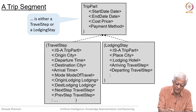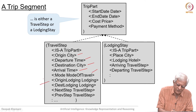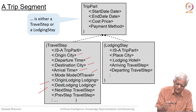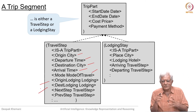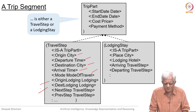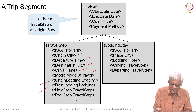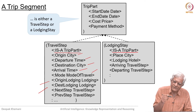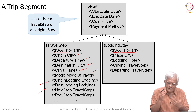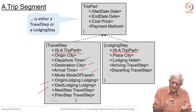In a travel step you will have an origin city, a departure time, a destination city, arrival time, mode of travel, then what was the origin city lodging, what is the destination city lodging, and so on. All this will be put together into one large network of information. Likewise for lodging stay. Both of them are sub-concepts of trip part essentially — travel step is a trip part and lodging stay is a trip part.